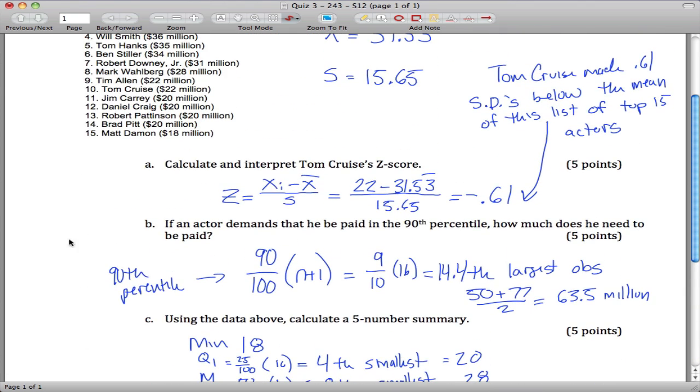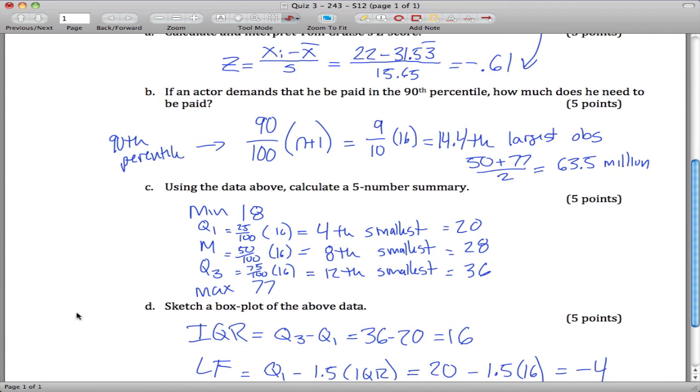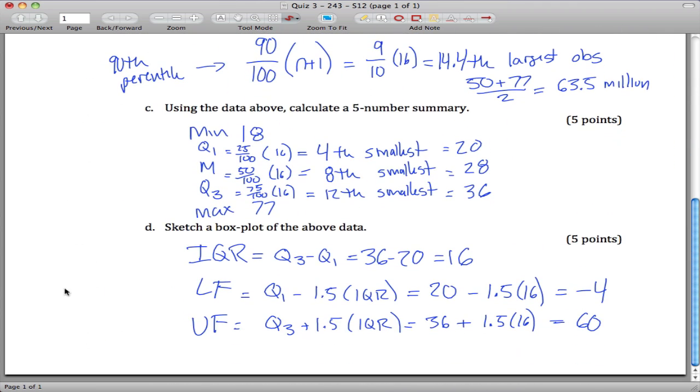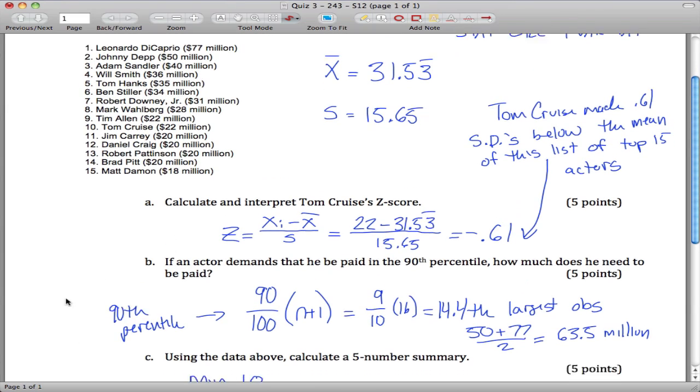If you go and look at our data, we got one observation that's above 60, so one guy is actually an outlier here. So when we create our box plot, we'll take advantage of the fact that our data list goes from 18 to 77.